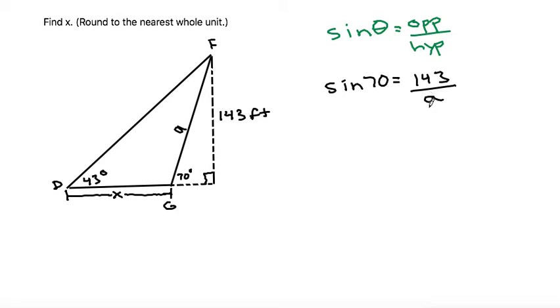Now, to solve for A, since A is in the denominator, we need to get A out of the denominator. So let's multiply both sides by A, since this A and this A will cancel. And it leaves us with A times sine 70 is equal to 143. From here, to finish solving for A, it's now multiplied by sine 70. So let's do the inverse operation and divide both sides by sine 70.